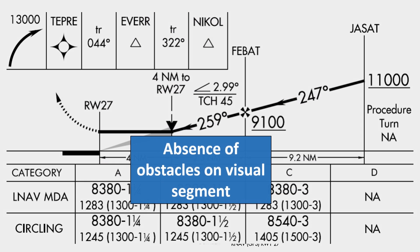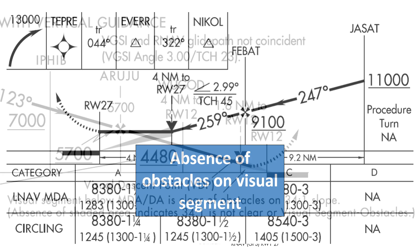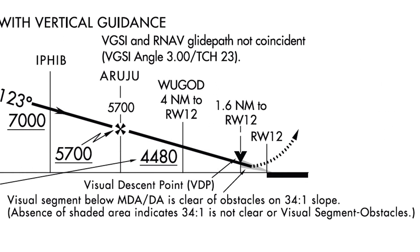It means that the visual segment — the approach segment from the MDA down to the runway — is clear of visual obstacles. Specifically, no obstacles penetrate a 34-to-1 slope line from the runway threshold to the MDA. If there had been an obstacle, there'd be no stipple. This is an LNAV approach; there is no vertical guidance at all, so that stipple doesn't indicate anything about that.